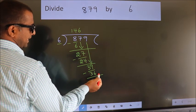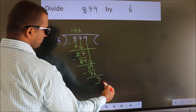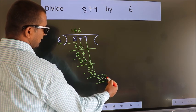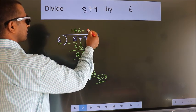No more numbers to bring down. So we stop here. This is our remainder. This is our quotient.